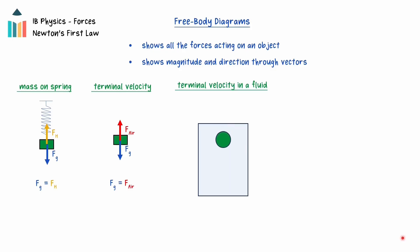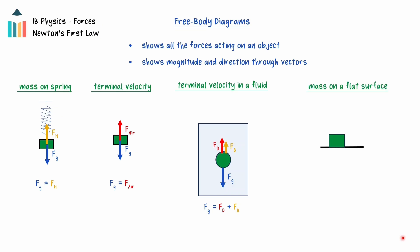If an object sinks towards the bottom of a container at a constant speed, the force of gravity will be acting down, and there will be an upwards buoyancy force acting, as well as a drag force opposing the motion. Because the net force is zero, the magnitude of the force of gravity will equal the sum of the drag and buoyancy forces. If an object is resting on a horizontal plane, a force of gravity will be acting downwards, and there will be a normal force acting upwards, perpendicular from the surface of the plane. Because this object is in equilibrium, these forces are equal in magnitude.